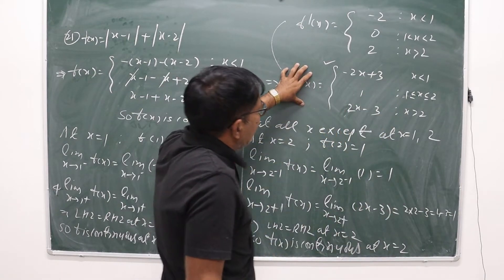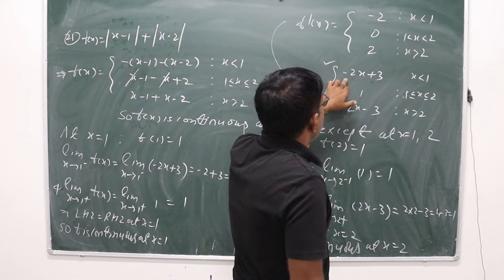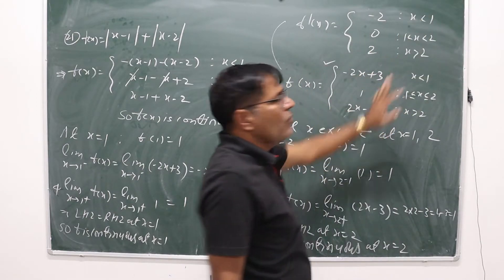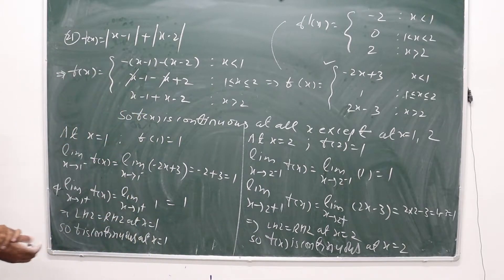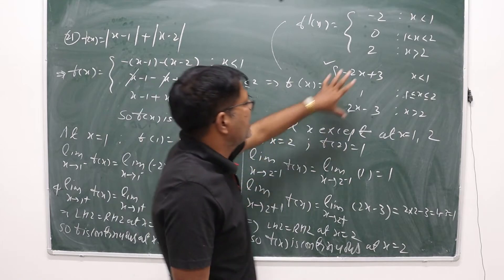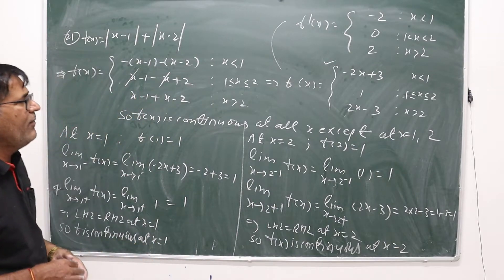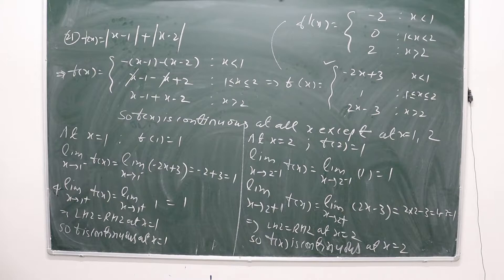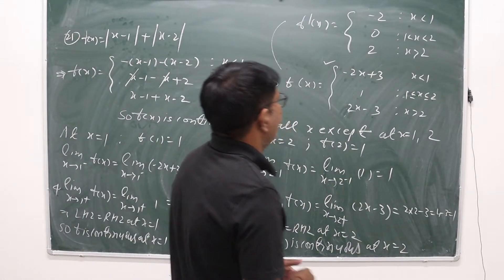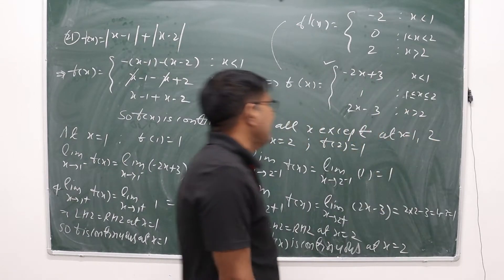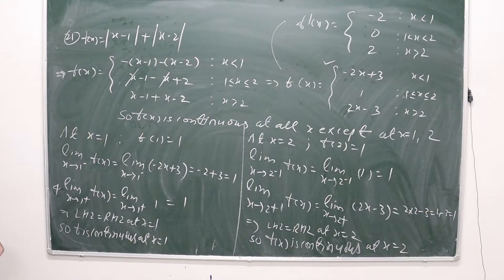The derivatives of each piece are: f'(x) = -2 for x < 1; f'(x) = 0 for 1 < x < 2; f'(x) = 2 for x > 2. Each piece is a linear (polynomial) function, and every polynomial is everywhere differentiable and continuous. However, at the junction points x = 1 and x = 2, we need to check continuity and differentiability separately.